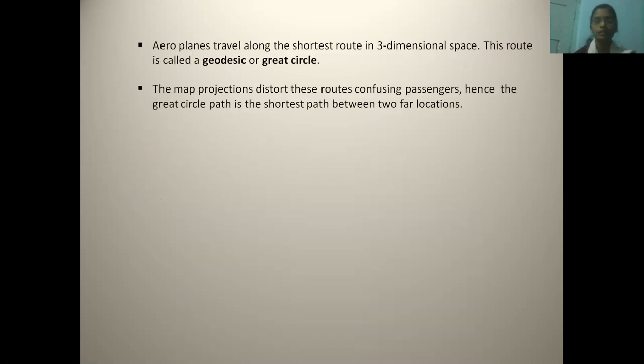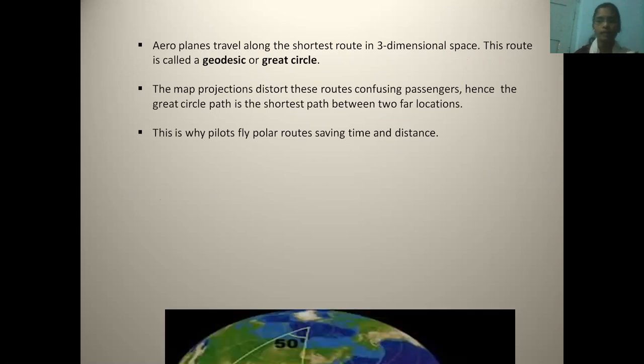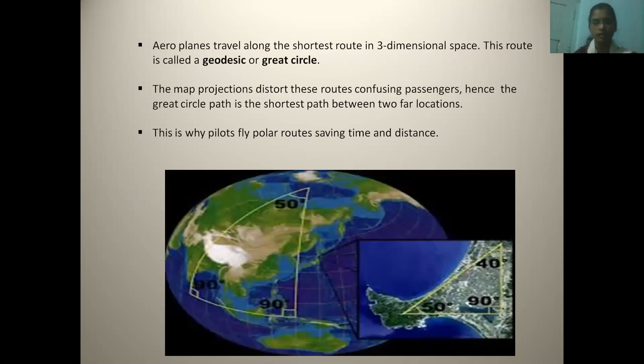Now, going to the applications of spherical geometry. Aeroplanes travel along the shortest route in three-dimensional space. This route is called geodesic or great circle. The map projection distorts these routes confusing passengers. Hence, the great circle path is the shortest path between two far locations. This is why the pilots use or fly polar routes, saving their time and distance. From this image, you can study the spherical geometry.